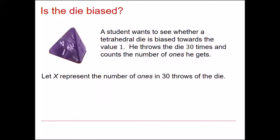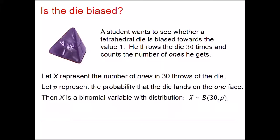Consider this situation. A student wants to see whether a tetrahedral die is biased towards the value 1. He throws the die 30 times and counts the number of ones he gets. If we let X represent the number of ones in 30 throws of the die, then this makes it a binomial variable with the distribution X distributed B(30, p).